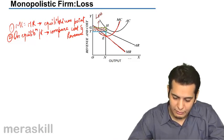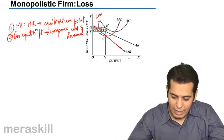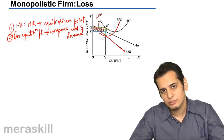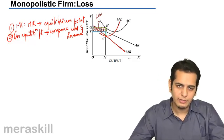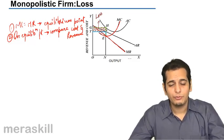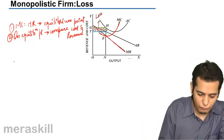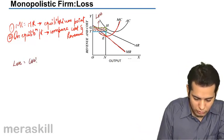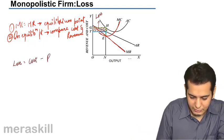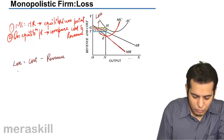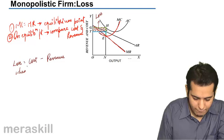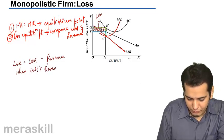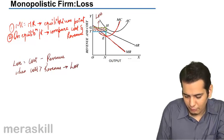At point E, the average cost curve is higher than the average revenue curve. And thus, when cost is more than the revenue, you will get losses. So, for loss equals to cost minus revenue or when cost is more than revenue, it will result in loss.